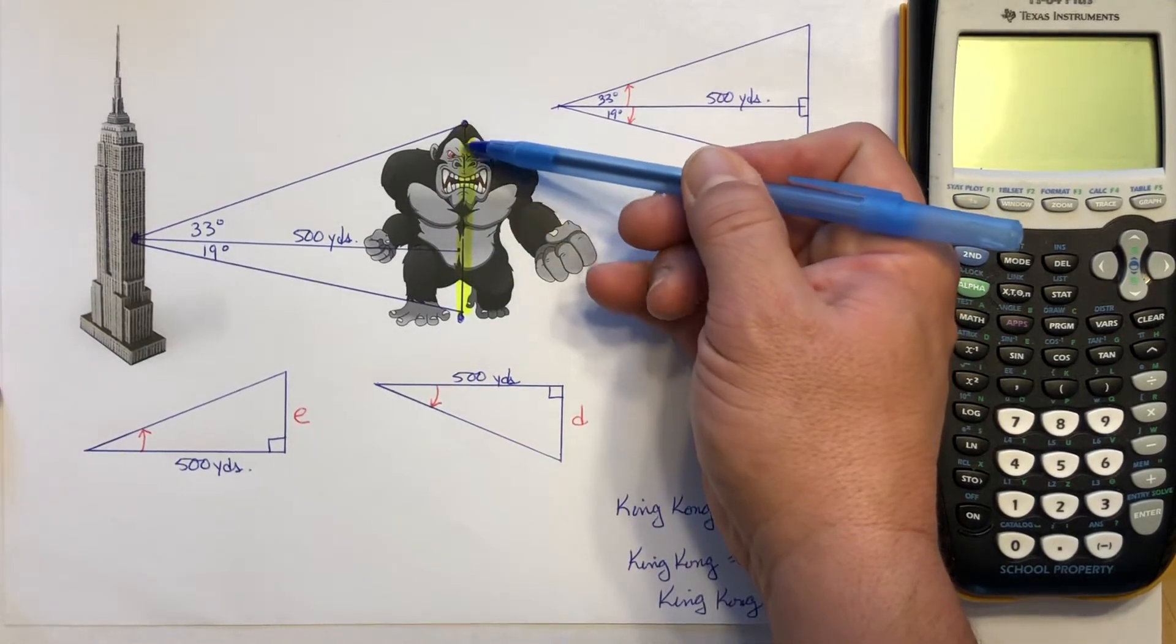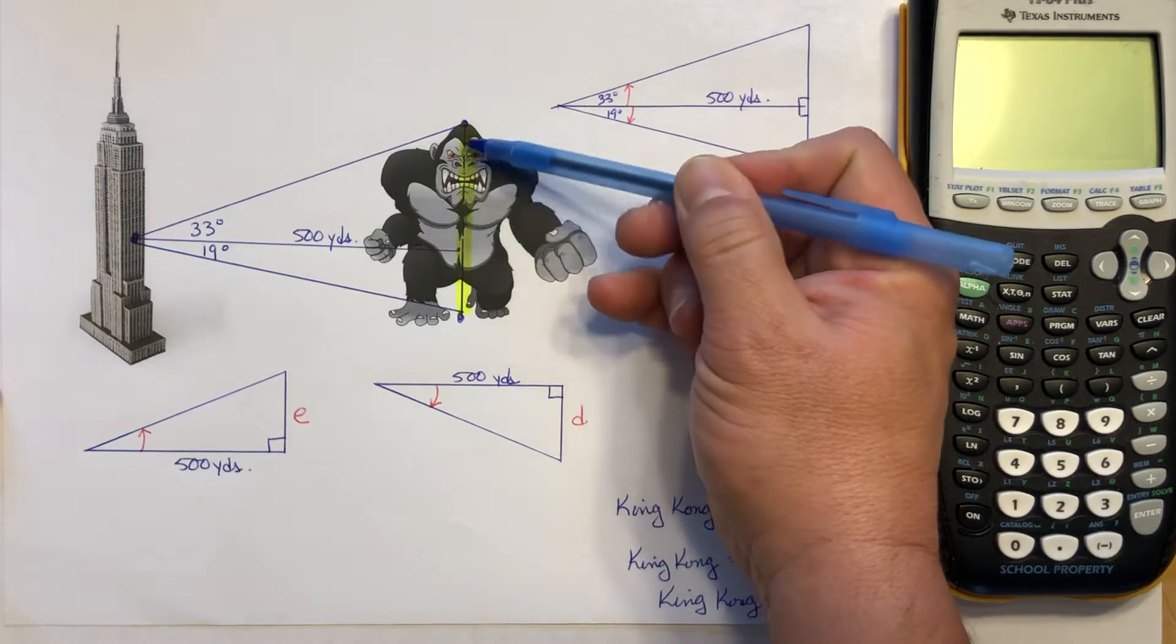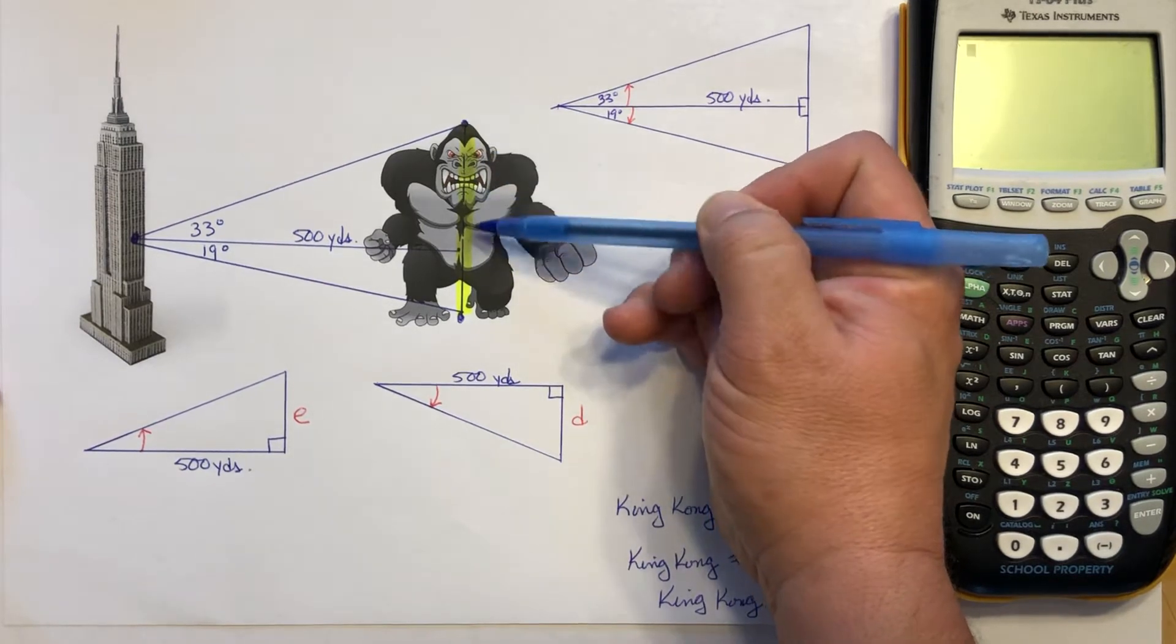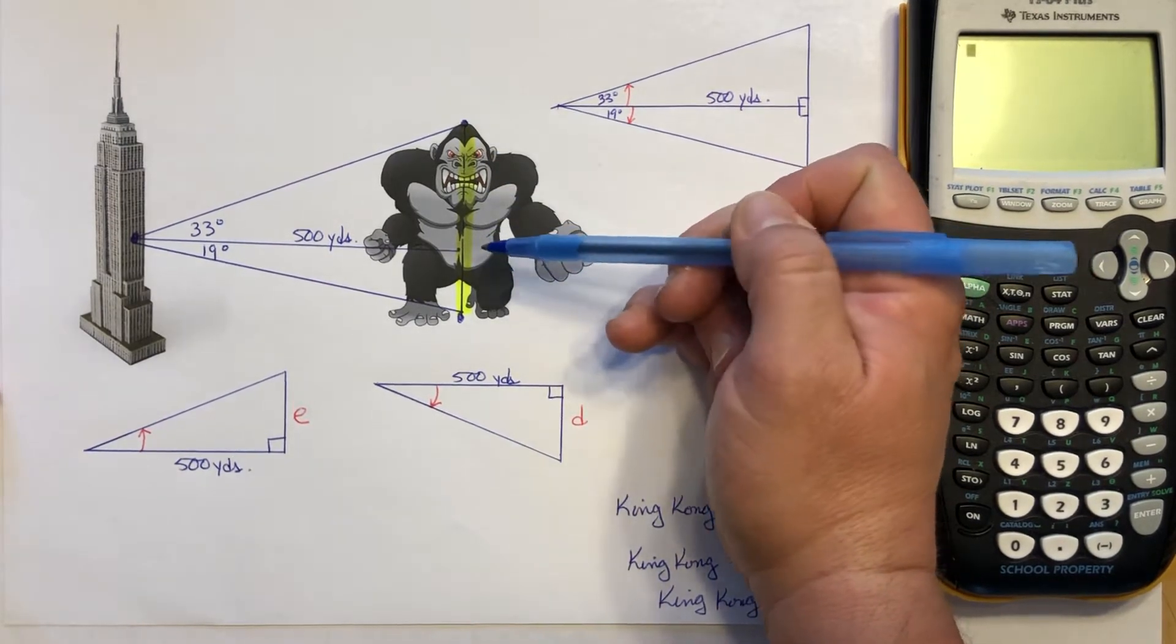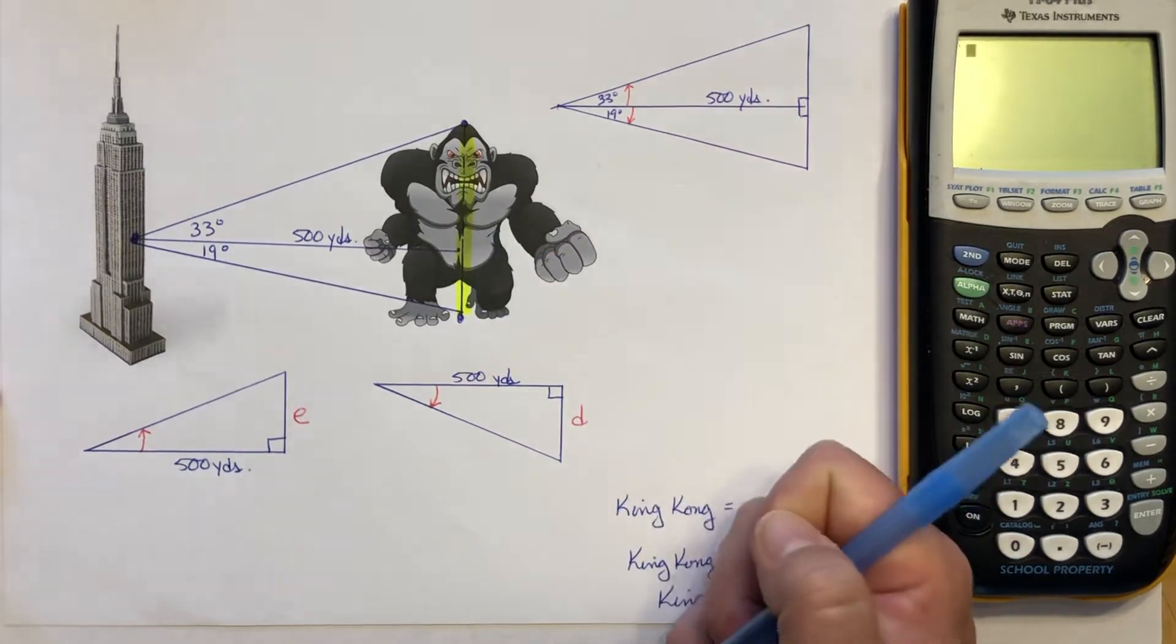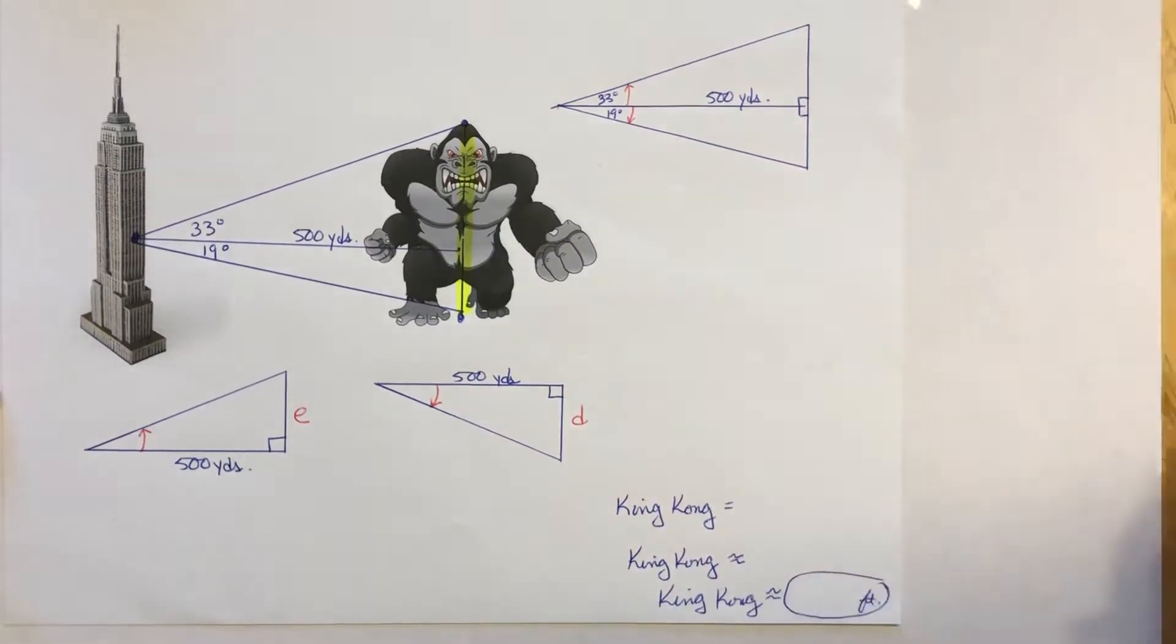The top triangle will only get me part of King Kong's height. Looks like it's going from his head down to about his belly button. The bottom triangle will get us the rest of the height. So basically here's what I'd like to do.